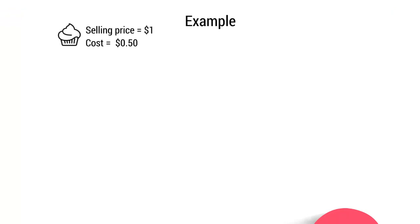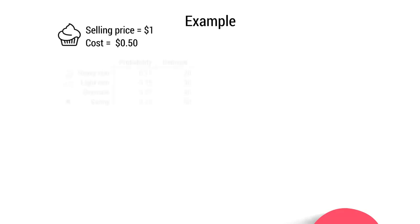We'll use an example to demonstrate this and we're going to look at Susan and her bakery. Susan makes cupcakes — they sell for $1 a piece and they cost her $0.50 each to produce. All cupcakes are made in batches of 10 and unsold cupcakes are thrown away at the end of the day. So there is a real risk that if she produces too many cupcakes she'll have to throw them away, losing both the cost and the potential sales revenue.